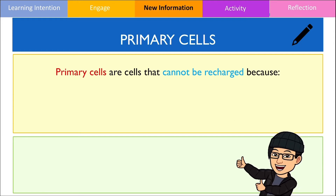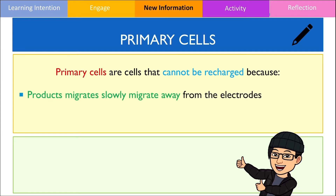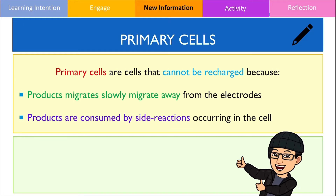Unfortunately, primary cells are specifically designed to not be recharged and there are two reasons for this. Firstly, the products formed from the redox reaction migrate away from the electrode. In order for the reverse reaction to occur, the products must remain in close proximity, as the site of oxidation and reduction occurs on the surface of the electrode. Secondly, the products might be consumed by side reactions occurring in the cell and are thus not present for the reverse reaction to occur.